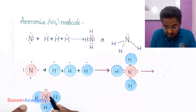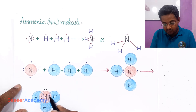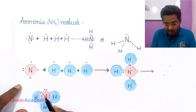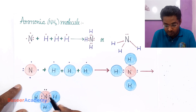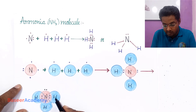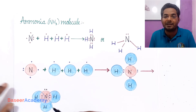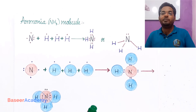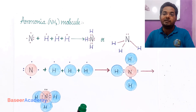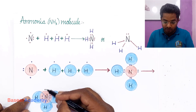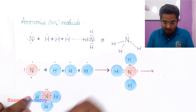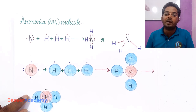But the bond pair electrons are attracted by the nucleus of both atoms — for example, by the nucleus of nitrogen and by the nucleus of hydrogen. So the bond pair electrons are attracted by two nuclei, while the lone pair electrons are attracted by only one nucleus.